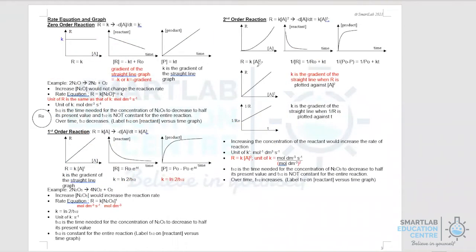The final graph you need to know is for second-order. In a second-order reaction, rate equals K times the concentration of A squared. If you sketch reaction rate versus concentration of A, you get a curve, but if you sketch it versus concentration of A squared, you should get a straight line with gradient K — proving the reaction is second-order.